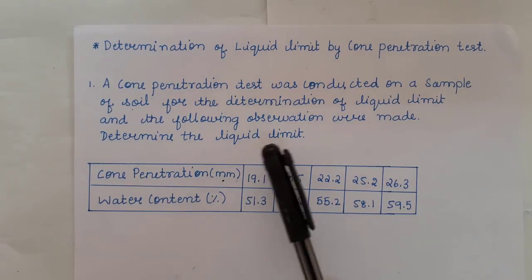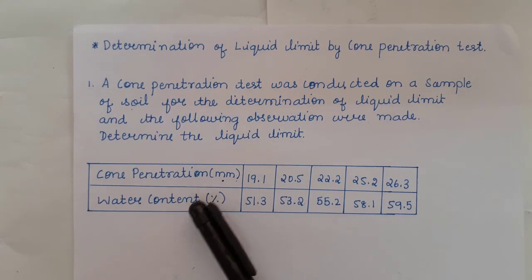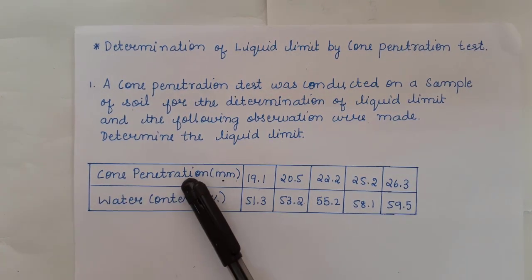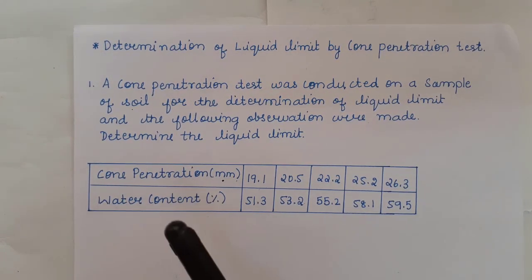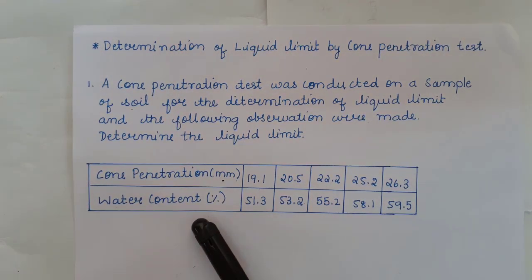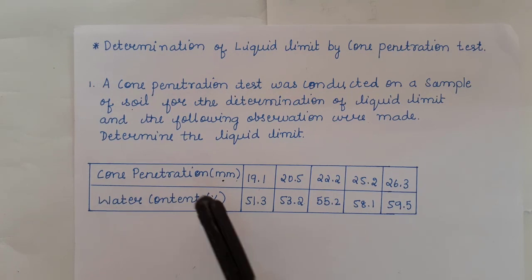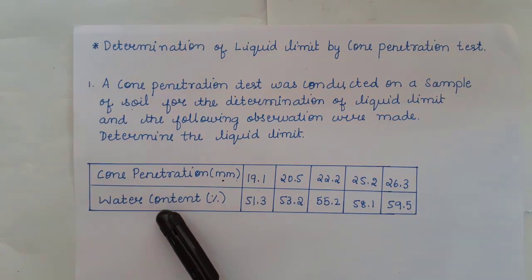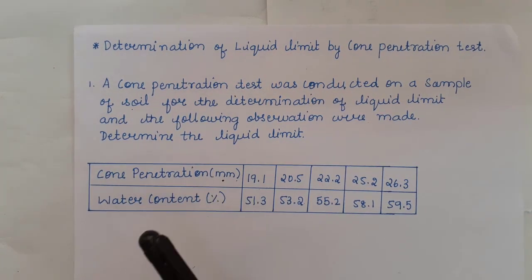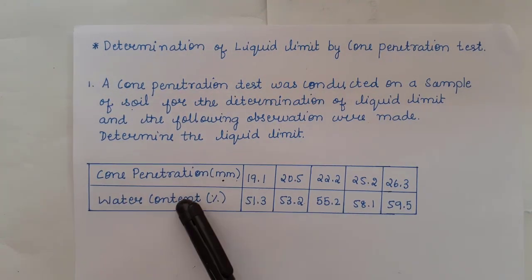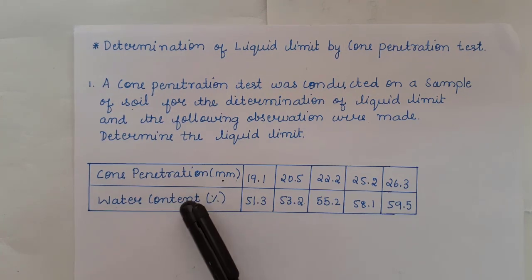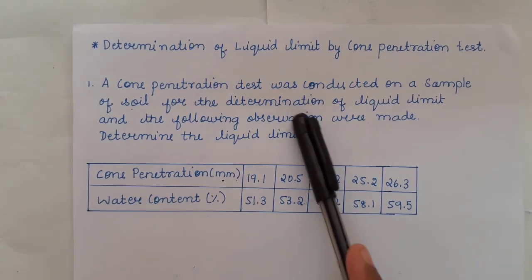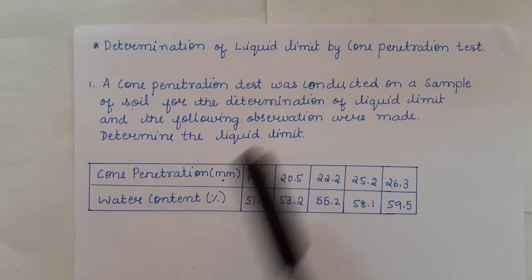The given data includes cone penetration values and water content values. With respect to these cone penetration values and water content values, a graph should be plotted and then you need to calculate what is the liquid limit of the soil.